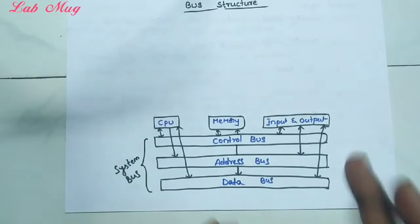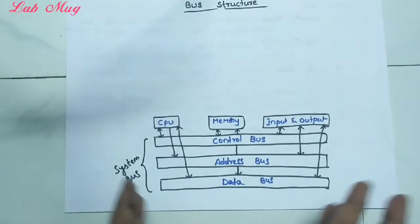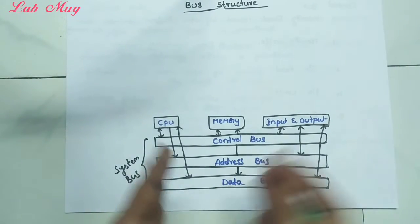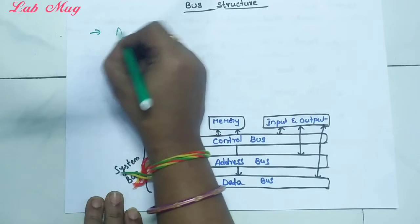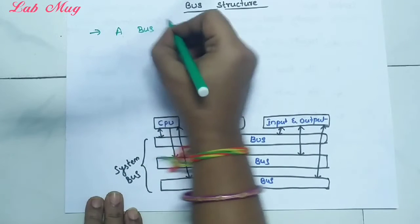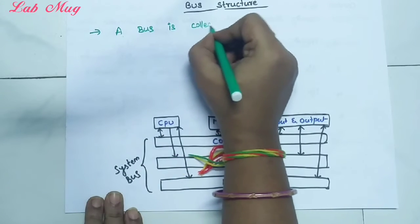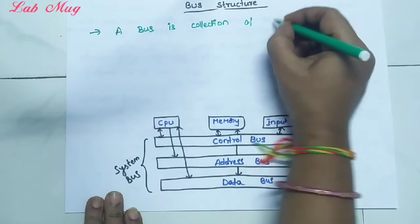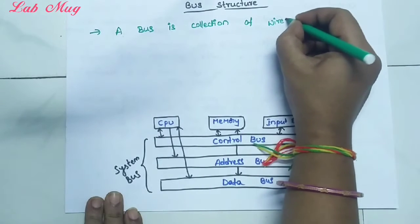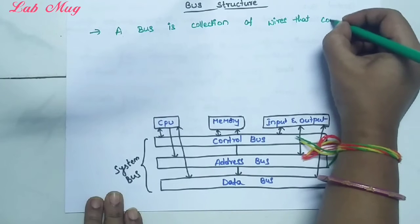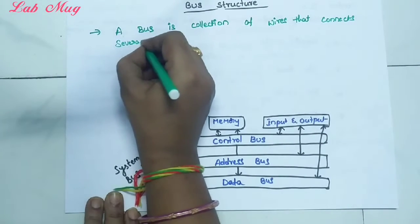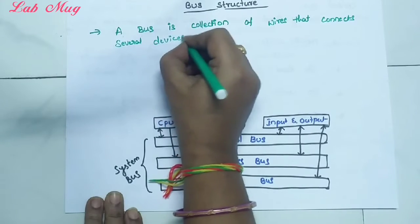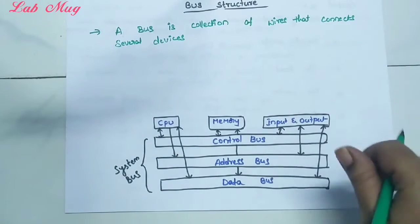In computer organization, when we talk about bus structure, we use a collection of wires that connects several devices, based on a single bus. So let me write the definition: a bus is a collection of wires that connects several devices.